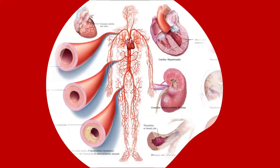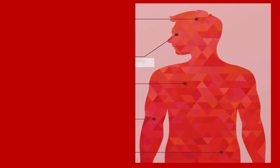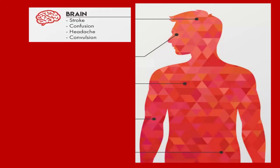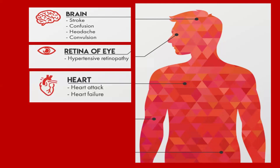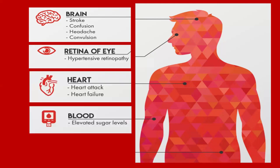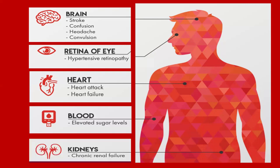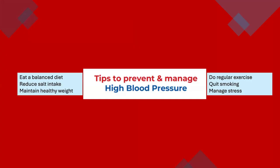The complications of hypertension can affect the brain, causing stroke, confusion, headache, and convulsion. They can affect the retina of the eye and cause hypertensive retinopathy. They can affect the heart, causing heart failure or heart attack, or cause elevated blood sugar levels with chronic renal failure.